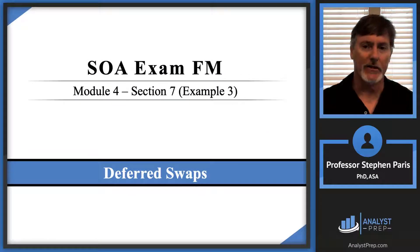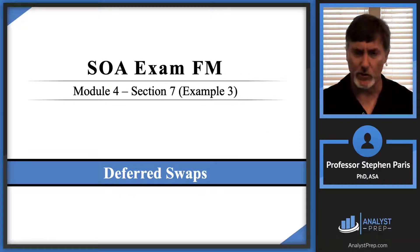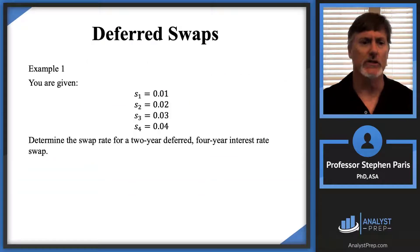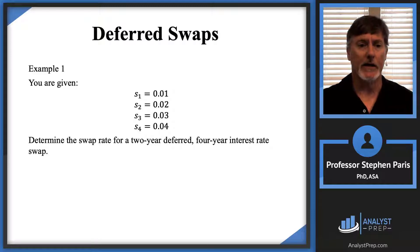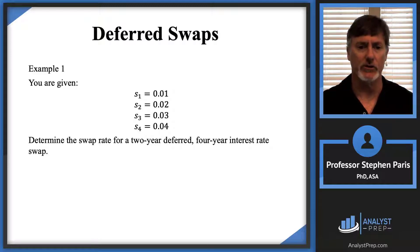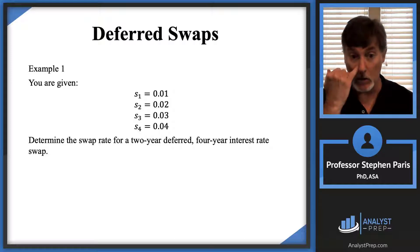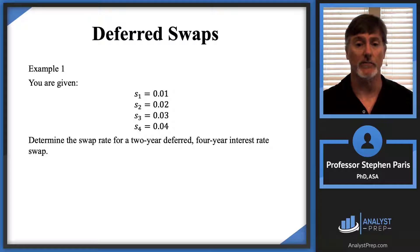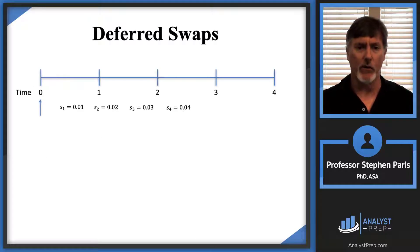In this video we're going to talk about deferred swaps through a couple of examples. In this first example, we've got a term structure of interest rates: one-year spot rates of 1%, two-year spot rates of 2%, and so forth. We want to determine the swap rate for a two-year deferred four-year interest rate swap.